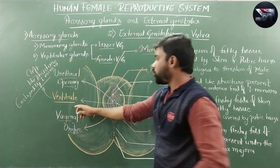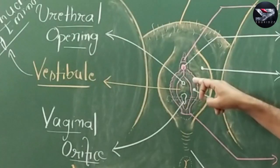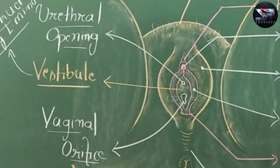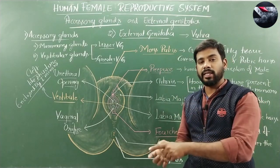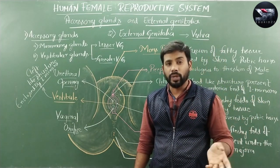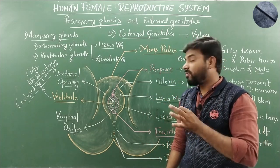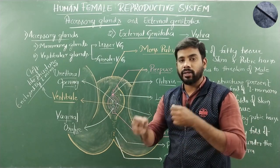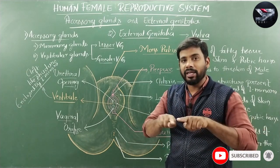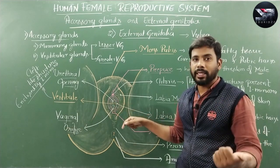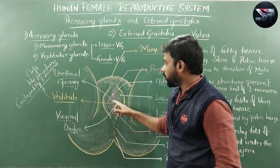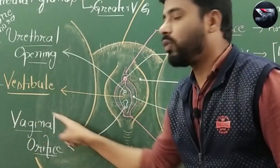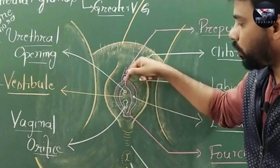The vestibule is a common area under the labia minora where both the urethral opening and vaginal orifice are present. In human males the urethra is a common passage for both semen and urine, hence called the urinogenital duct. But in human females the urethral opening is different from the vaginal opening — both urinary and reproductive tracts have separate passages, so the female urethra is not a urinogenital duct. The urethral opening is present towards the anterior end, and the vaginal orifice towards the posterior end of the vestibule.